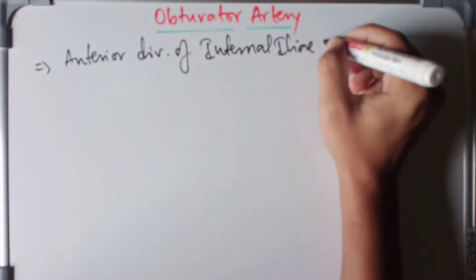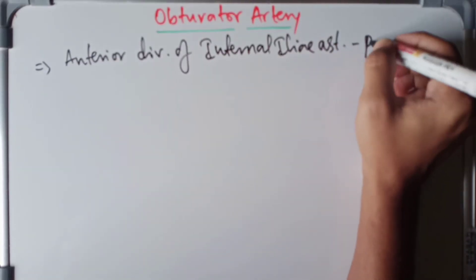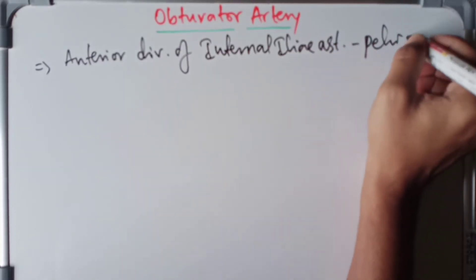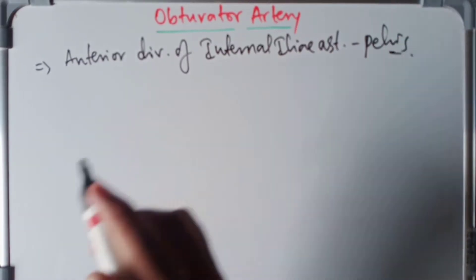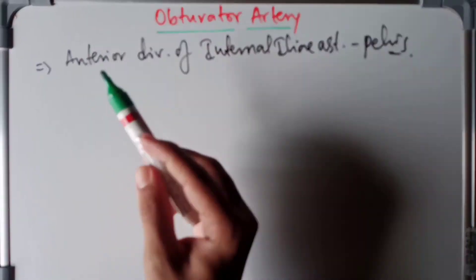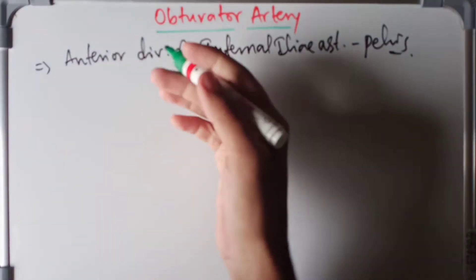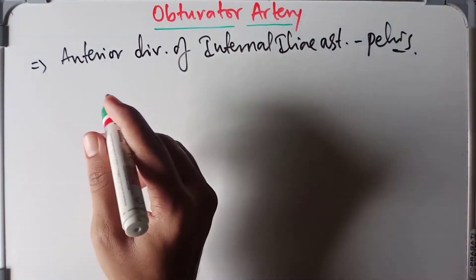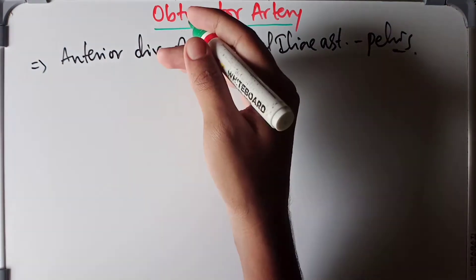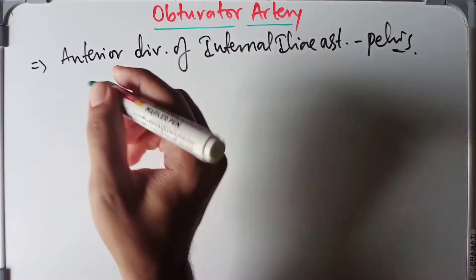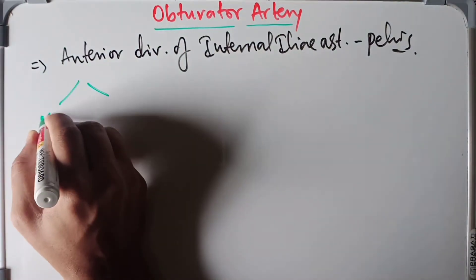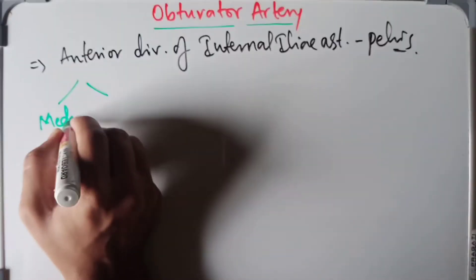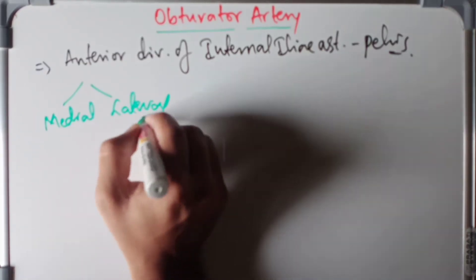From the pelvis, it enters the adductor compartment of the thigh through the obturator canal. From there, it divides into the medial and the lateral branches.